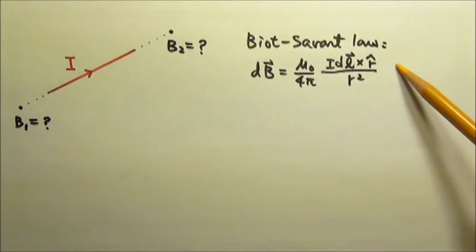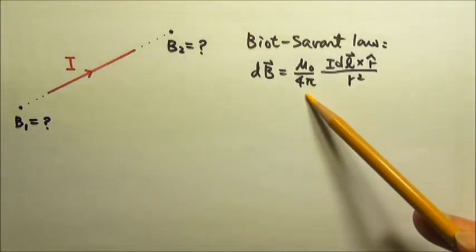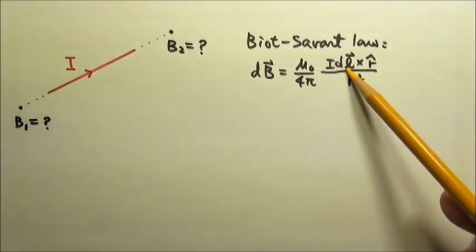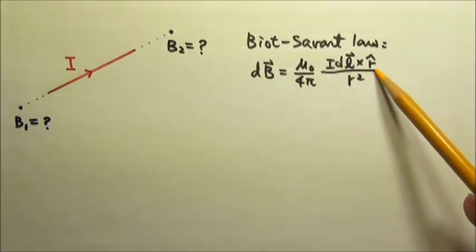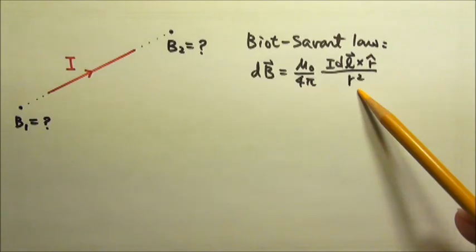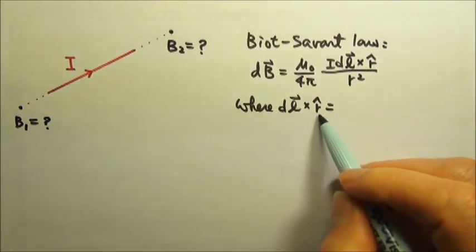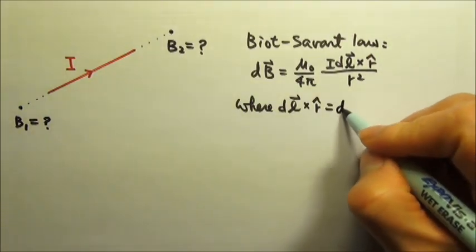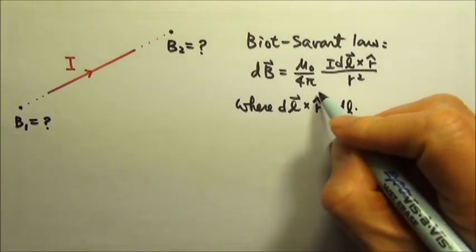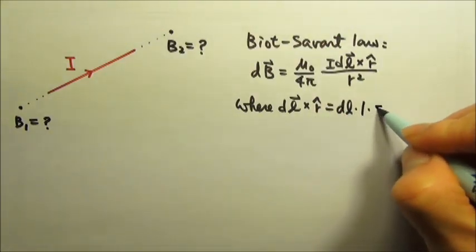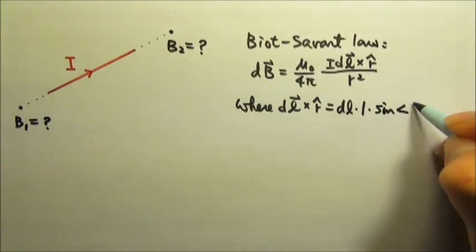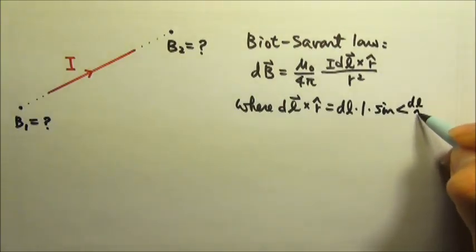We can conveniently use Biot-Savart law for this problem: dB equals mu naught over 4 pi times idl cross unit vector r divided by r squared, where dl cross unit vector r equals dl times the length of unit vector 1 times sine the angle between dl and r.